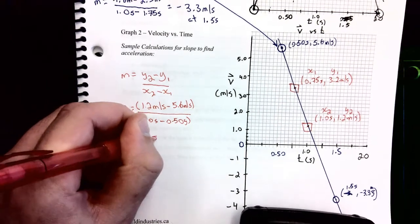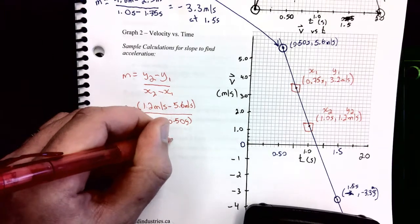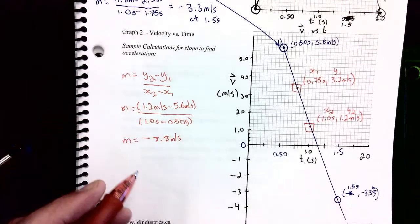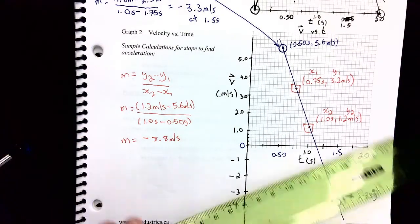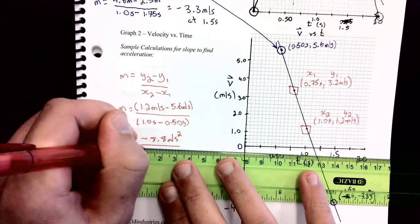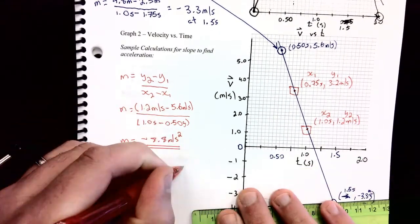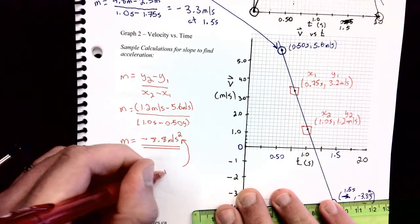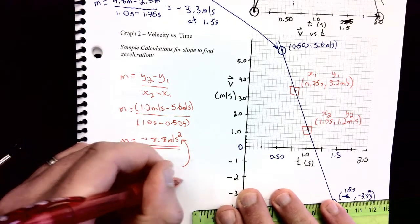So I'm getting negative 8.8 meters per second squared, pardon me, meters per second squared is my slope, and the slope of your velocity time graph is the acceleration.